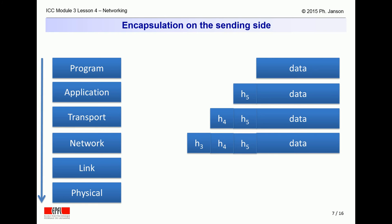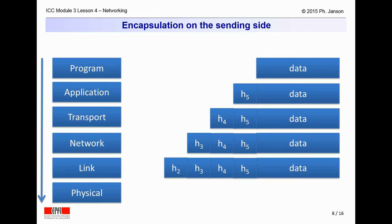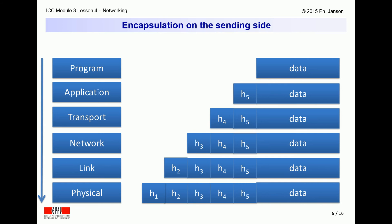The transport protocol layer in turn passes the resulting message to the network protocol, which prefixes it with its own network protocol header, H3, in this example. The network protocol layer in turn passes the resulting message to the link protocol, which prefixes it with its own link protocol header, H2, in this example. The link protocol layer in turn passes the resulting message to the physical layer protocol, which prefixes it again with its own physical protocol header, H1, in this example. The physical protocol layer finally sends the resulting message across the actual physical wire or wireless medium onto the adjacent device, a router or a directly receiving computer on the network, on its way to the designated target computer.